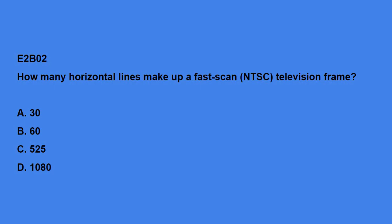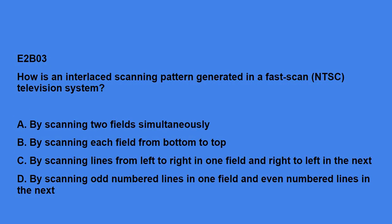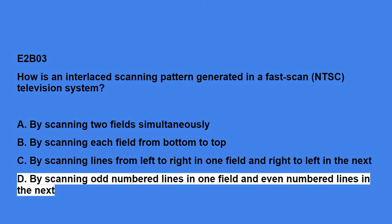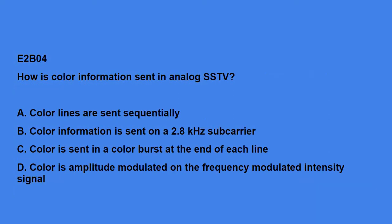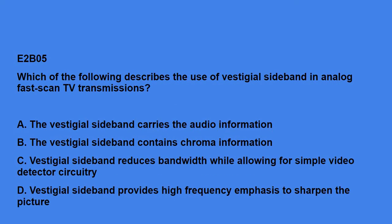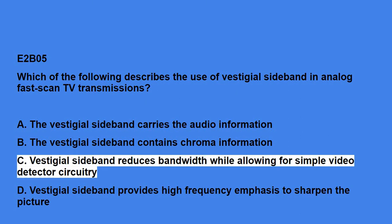E2B02: How many horizontal lines make up a fast scan NTSC television frame? The answer is 525. E2B03: How is an interlaced scanning pattern generated in a fast scan NTSC television system? By scanning odd-numbered lines in one field and even-numbered lines in the next. E2B04: How is color information sent in analog SSTV? Color lines are sent sequentially. E2B05: Which of the following describes the use of vestigial sideband in analog fast scan television transmissions? Vestigial sideband reduces bandwidth, allowing for simple video detector circuitry.